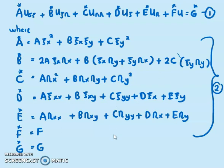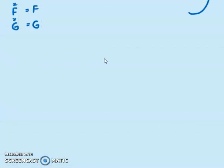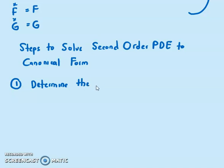So now, there are a few steps to solve this second order. Let's look at a few steps. Steps to solve second order PDE to canonical form. Step number 1 is to first determine the types of PDE.